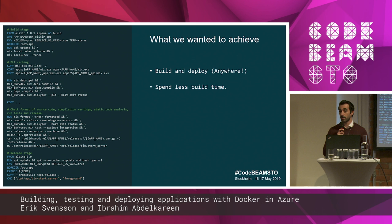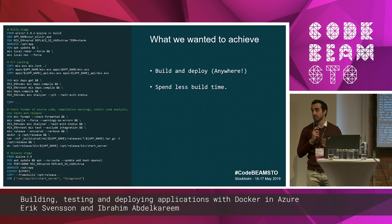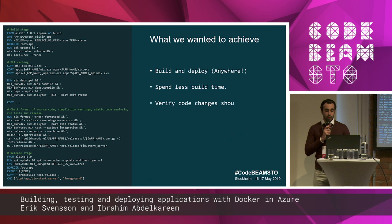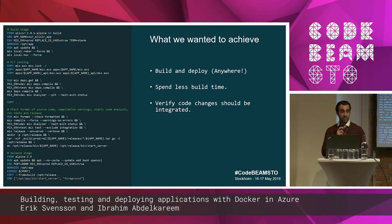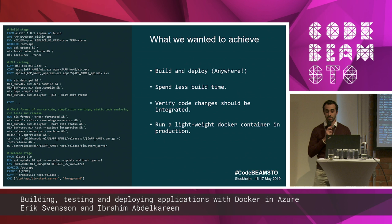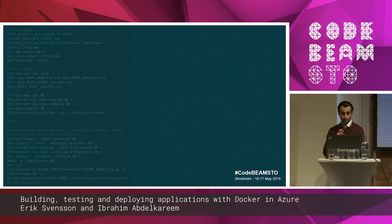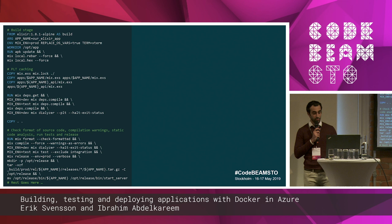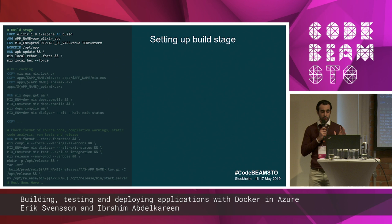Some build pipelines charge on build minutes, and if they don't, they'll charge on parallel jobs — if your build takes 30 minutes you'll need more parallel jobs, which means more cost. We also want to verify that code changes integrate correctly: tests are passing, no warnings or code smells, and we want to automate that as much as possible. Last but not least, we want to run a lightweight Docker container in production. So here is part of our Dockerfile — I'll highlight the build stage setup.